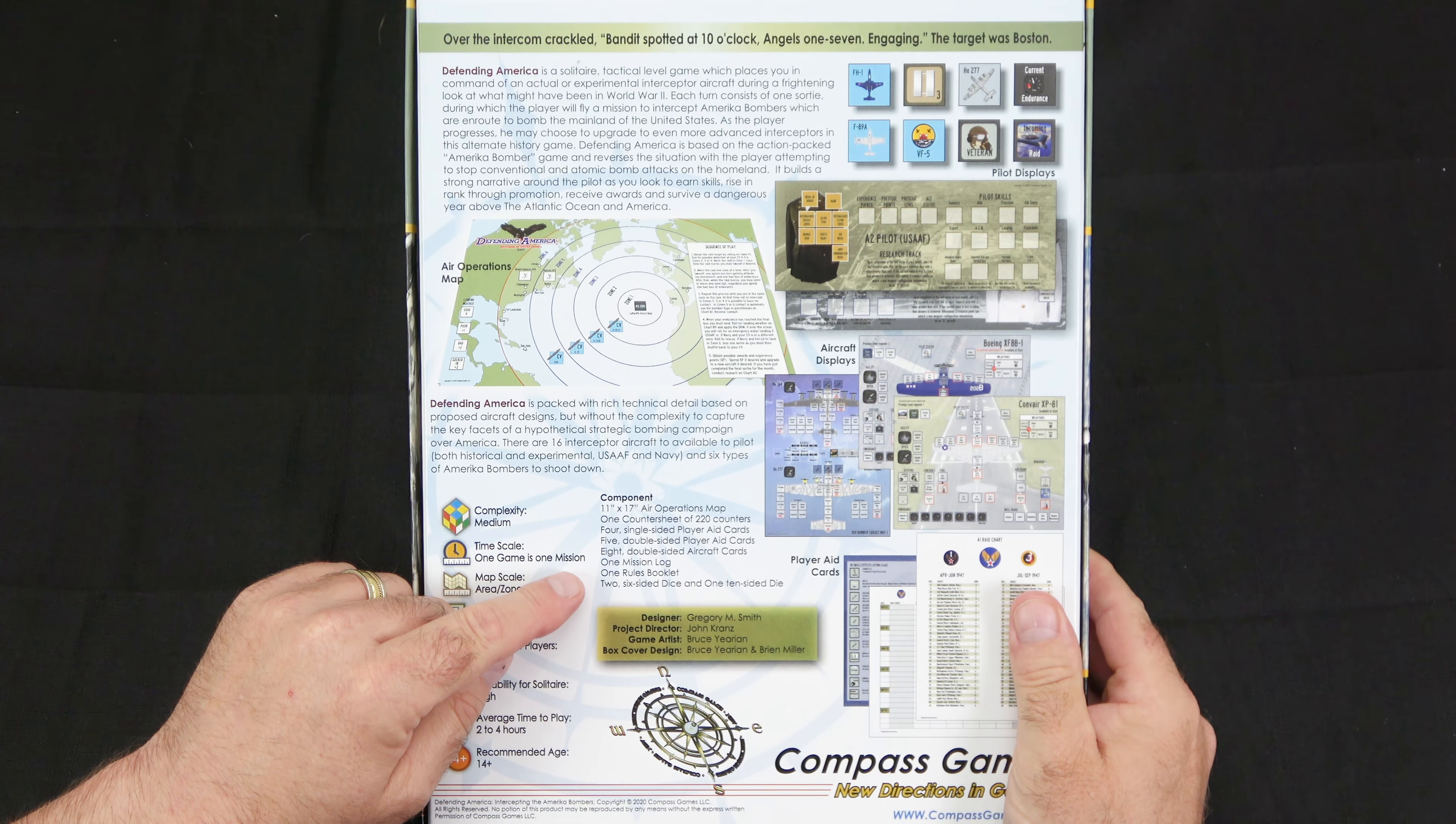full-color rule book, the sortie log, where we keep track of all the sorties, our player aids and aircraft mats all nicely bundled together, keeping them from getting damaged, our countersheet, shrink wrap to make sure that the counters don't fall out, and the mounted map board. So let's set up the map and take a closer look at the game.